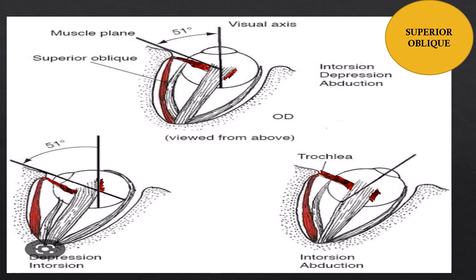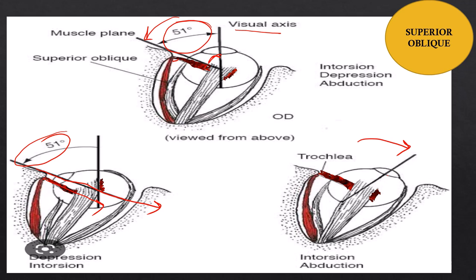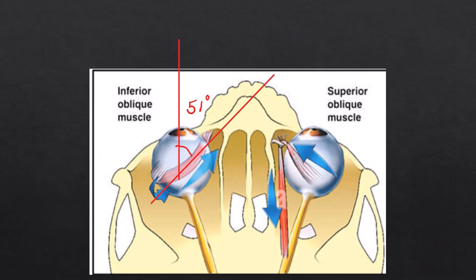Looking at the diagram, the superior oblique changes direction at the trochlea and inserts at an angle of 51 degrees from the visual axis, situated medially. On adduction of the eye by 51 degrees, the visual axis and muscle axis become parallel — this is the optimal testing position. The same principle applies to the inferior oblique. Both muscles follow the same relationship between adduction, depression/elevation, and the 51-degree angle.